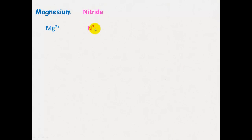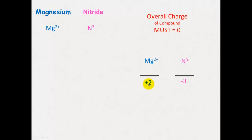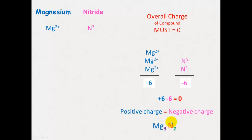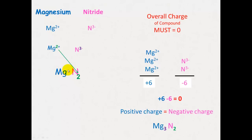For magnesium nitride — Mg²⁺ and N³⁻ — the overall charge must be zero. With a +2 and a −3, you need two nitrides to make a −6 charge and three magnesiums to make a +6 charge, so the positive equals the negative. That gives you Mg₃N₂. Using the cross method: the number of nitride ions equals the valency of magnesium, which is 2; and the number of magnesiums equals the valency of nitride, which is 3.